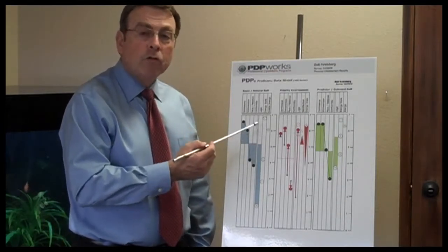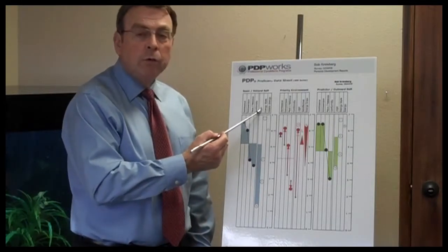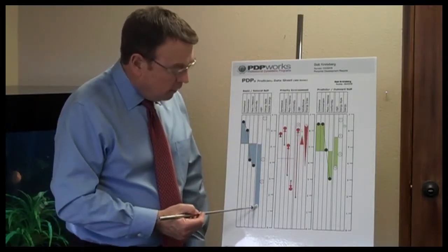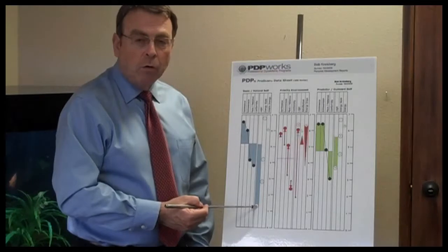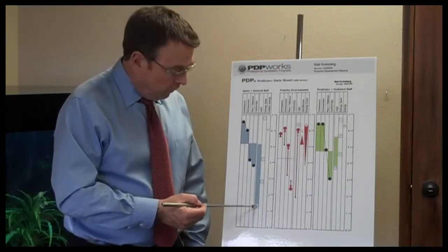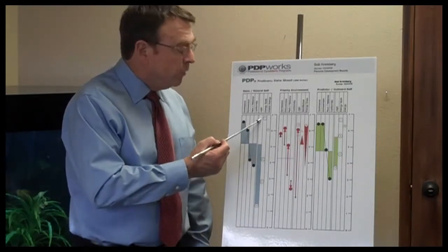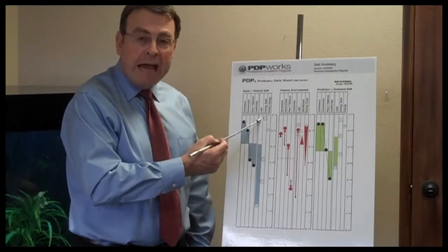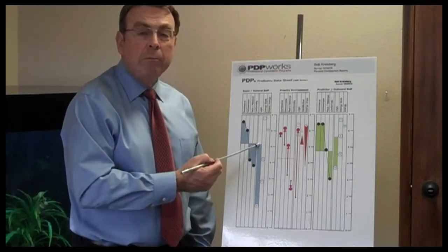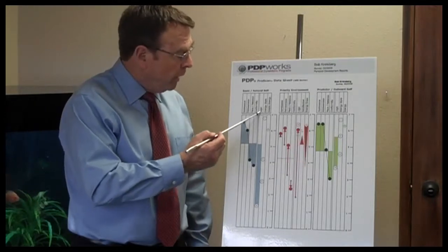But there are three additional things that get measured as well. One is called logic, which is a fact-feeling orientation. Mine indicates it's very feeling oriented. You'll see letters in yours too — it will either say FEL, which is feeling; or if it's pointing up, it would say FCT, which is fact. And if it's within a quarter of an inch of the norm line, it would say BAL, which is balance. Those are the three options for logic.